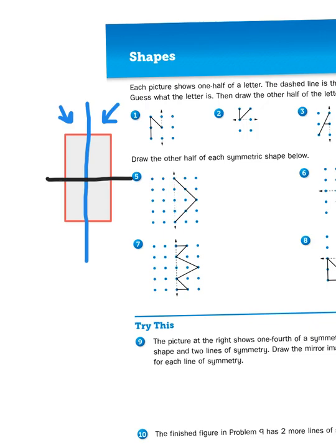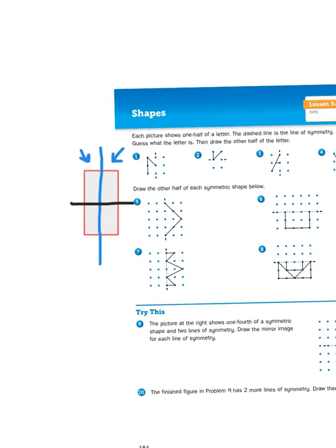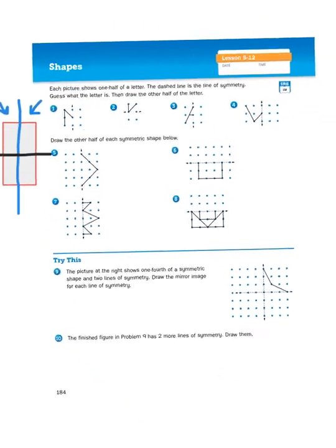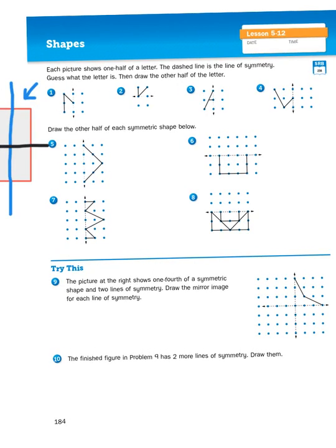Now with these figures that we have here we're going to be looking for some symmetry. And the first four problems ask you to identify the letter based on just the shape of one half of it. It's kind of like a guessing game. It says guess what the letter is then draw the other half of the letter.